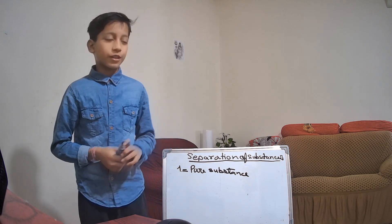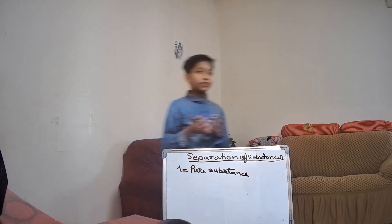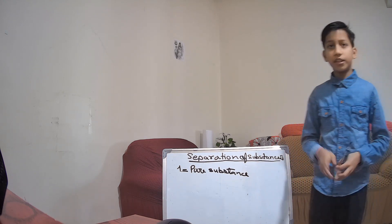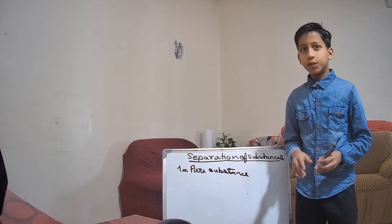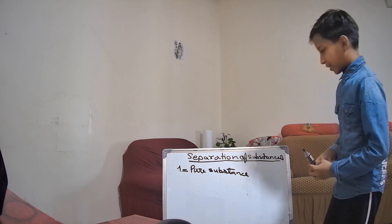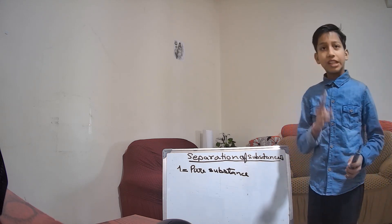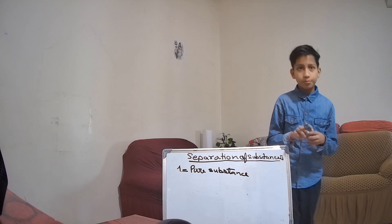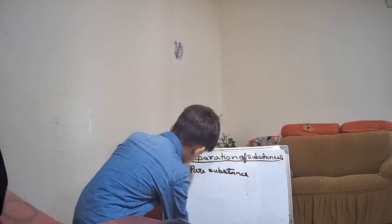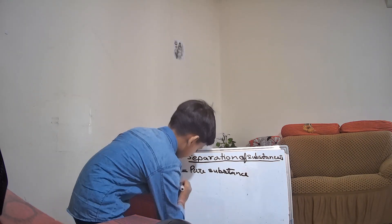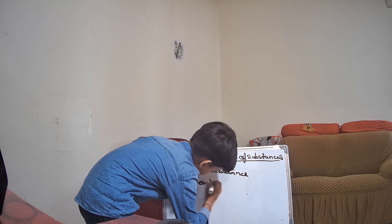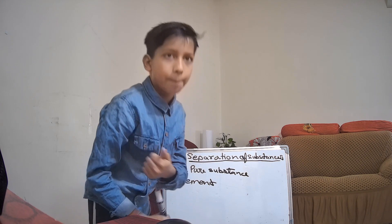What is a pure substance? A substance that is made up of only one kind of particle is called a pure substance. Please note it down. There are two types of pure substances: elements and compounds.